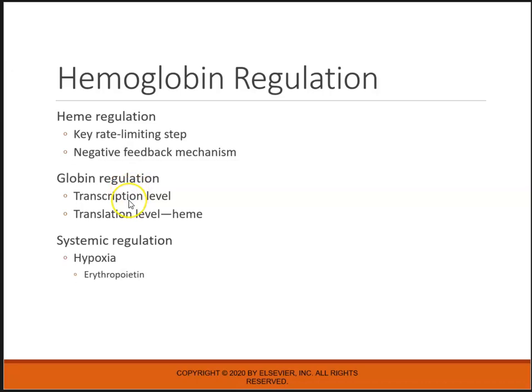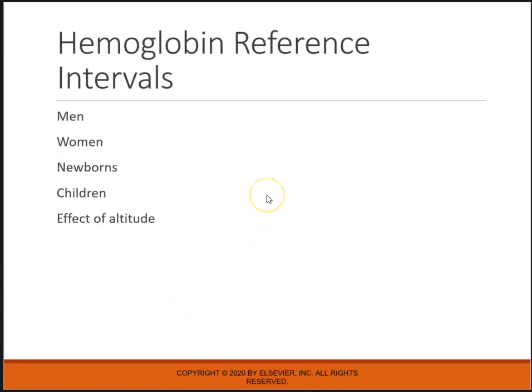Globin regulation is by how we transcribe and translate what goes on from the DNA to the RNA to actually make the proteins. The body regulates overall production through the kidneys. The kidneys determine the oxygen concentration. If there's hypoxia, they release the hormone erythropoietin, which tells the stem cells to produce more red blood cells.